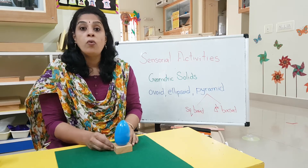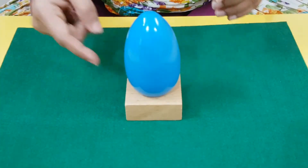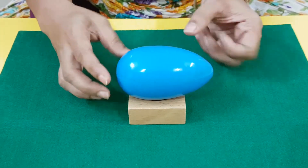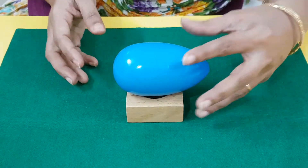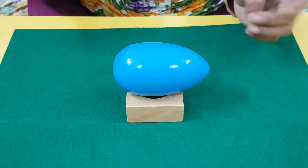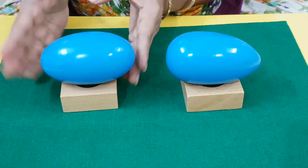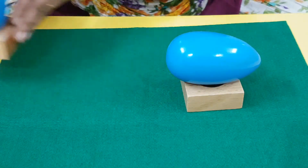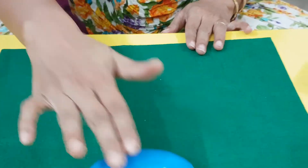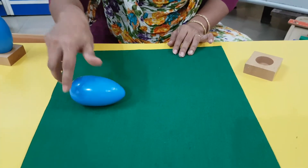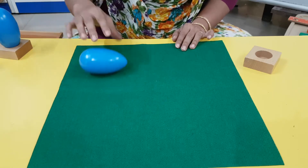Shall we take a closer look at how an ovoid will be? This is your ovoid. See, it is pointed here on one end — but let's check the other end. Is it pointed here? No — it is flat on one end and pointed on the other. This is ovoid. If you see the ellipsoid, both sides are the same; but the ovoid has only one pointed side. It can go back and forth and can spin, but only back and forth — it cannot go in circles like the cone.